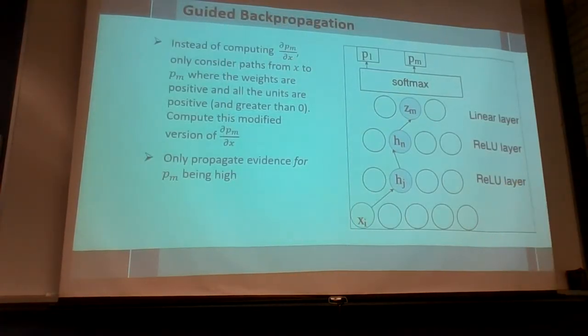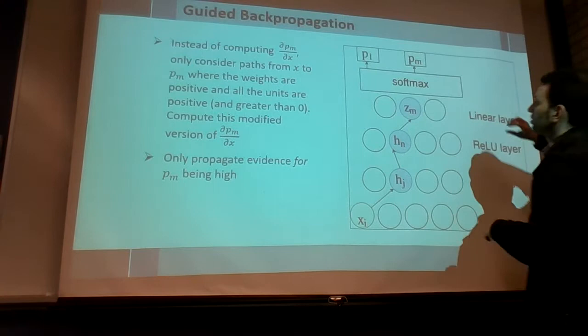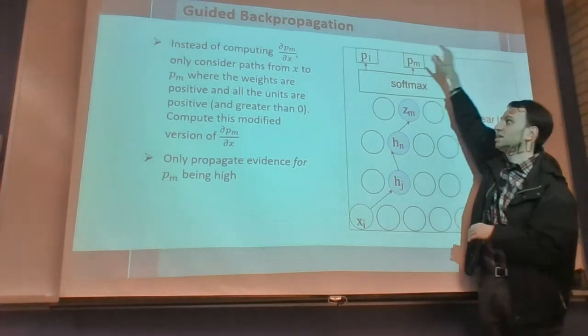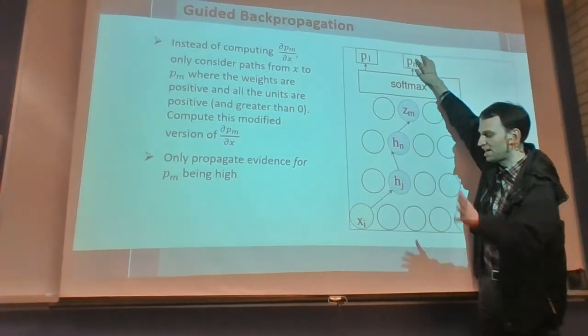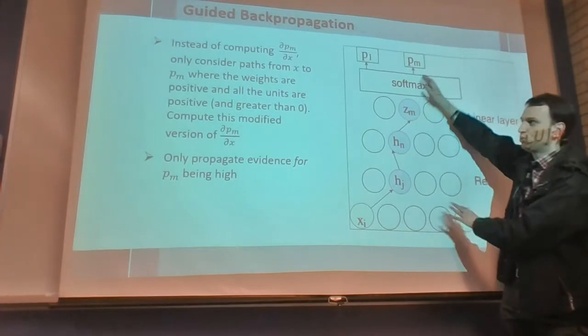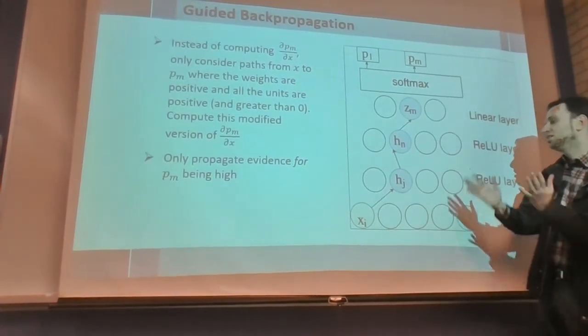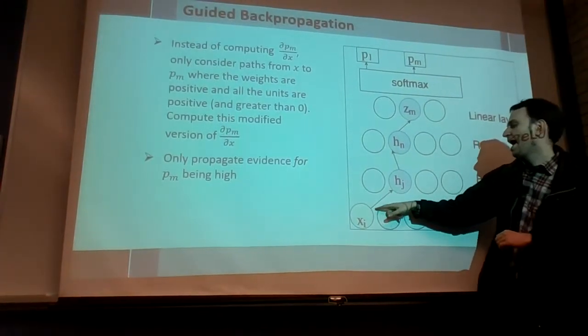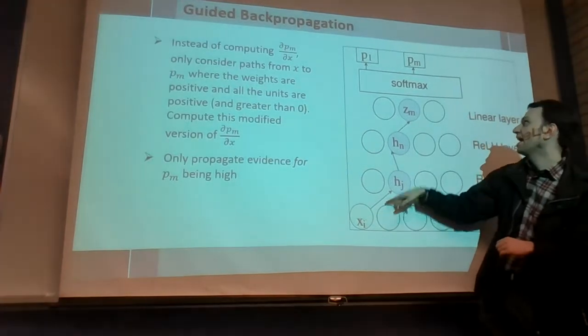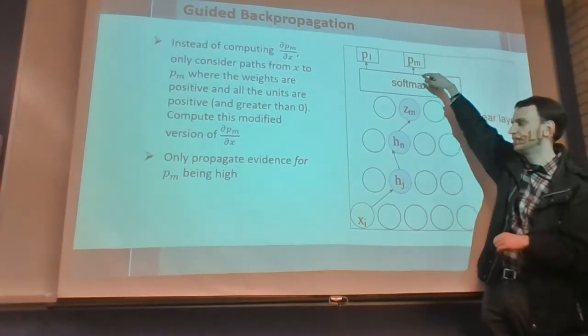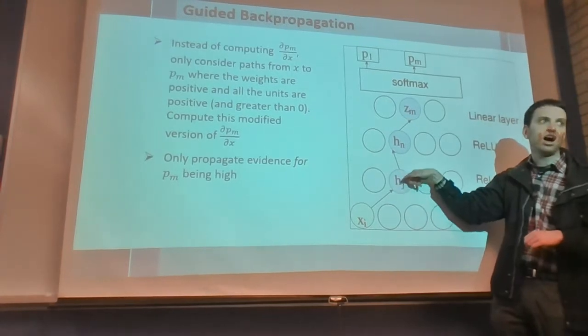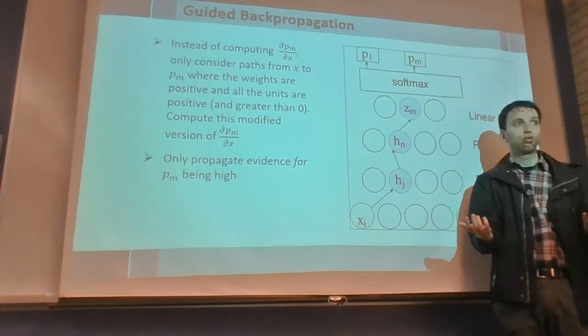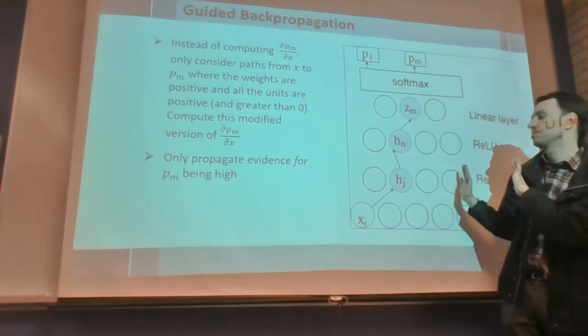So how does it work exactly? Well, again, what you want to do is you want to explain why is it that the output PM is high. Now, instead of computing the gradient dPM by dX, what we'll do is we'll compute a modified version of that. So that version will basically compute the gradient, except it'll only take into account paths between each X and PM where all the weights are positive and all the activations are positive, so greater than zero along the paths. Any path that's not like that is just going to get ignored. That's basically guided backpropagation.